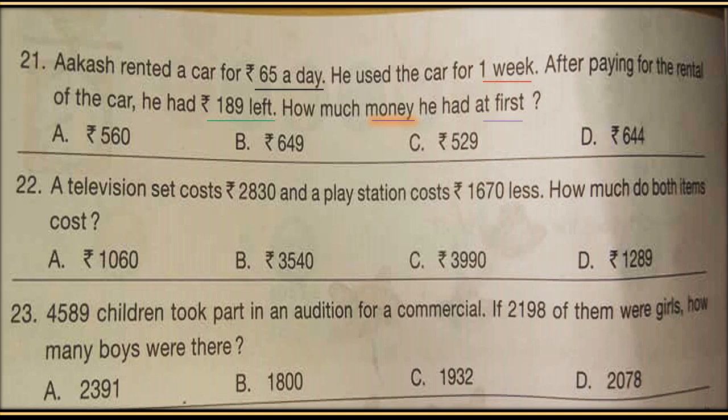Question number 22: A television costs Rs. 2830 and a PlayStation costs Rs. 1670 less. How much do both items cost together? The television costs Rs. 2830 and the PlayStation costs Rs. 1670 less than the television. Calculate the total cost of both items. Check the answer at the end of the video.